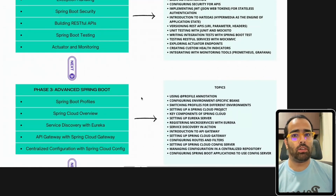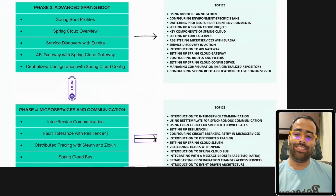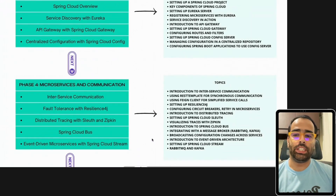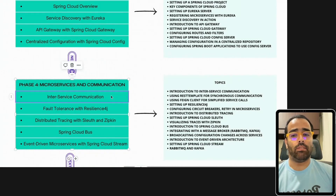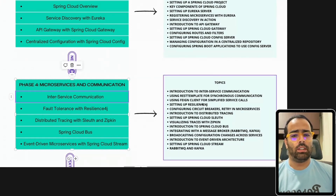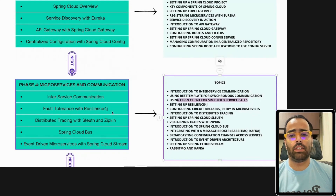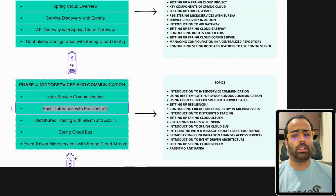Eureka service discovery and Spring Cloud are the two most heavily used concepts at the advanced level. Phase 4 covers microservices and communication, which is critical for enterprise-level systems with high volumes. When you have hundreds of services, calling them by URL is not efficient — you need proper inter-service communication using clients for simplified service interaction.